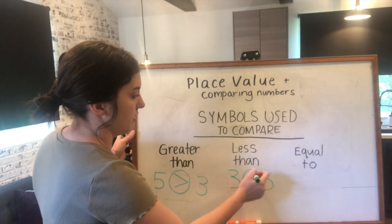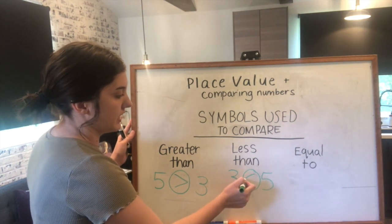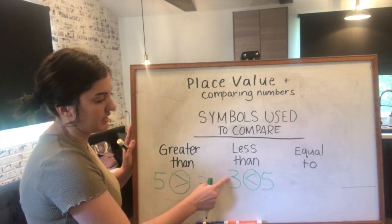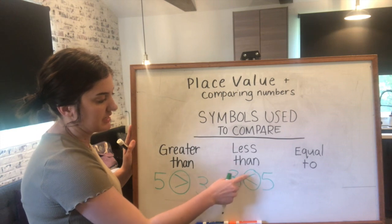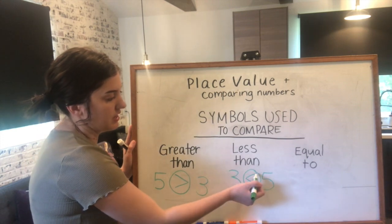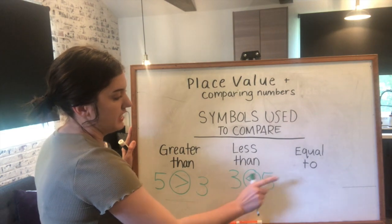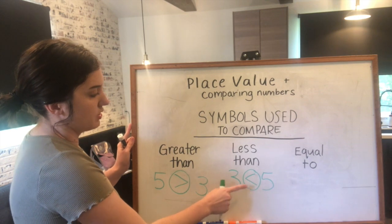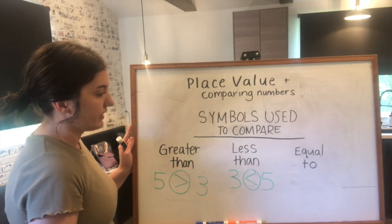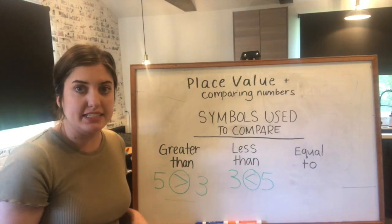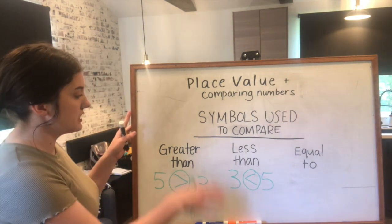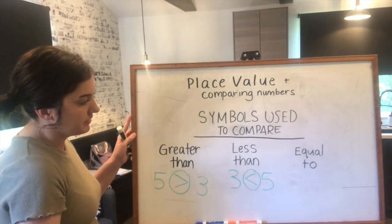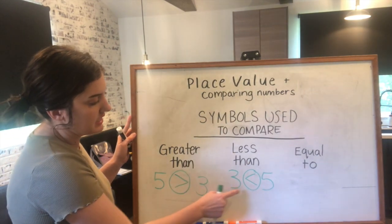Less than uses the same numbers with the circle in the middle, but the symbol goes the different direction. The three is less than five, so the alligator is pointing away from the three with its mouth open toward the five. You can read these just like a sentence.